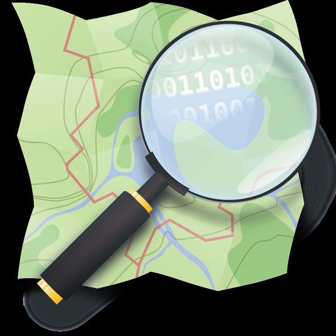OpenStreetMap is a collaborative project to create a free editable map of the world. Rather than the map itself, the data generated by the project is considered its primary output. The creation and growth of OSM has been motivated by restrictions on use or availability of map information across much of the world, and the advent of inexpensive portable satellite navigation devices. OSM is considered a prominent example of volunteered geographic information.